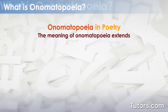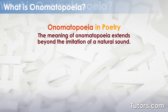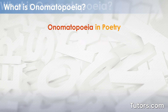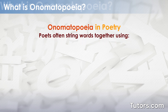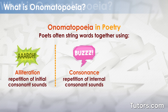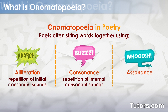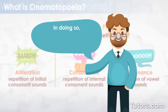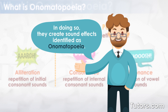In poetry, the meaning of onomatopoeia extends beyond the imitation of a natural sound. Poets often string words together using alliteration — repetition of initial consonant sounds — consonance — repetition of internal consonant sounds — and assonance — repetition of vowel sounds. In doing so, they create sound effects identified as onomatopoeia.